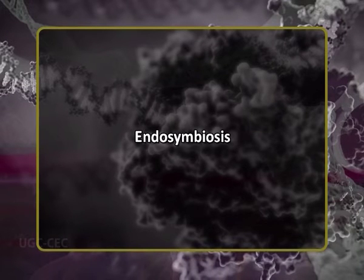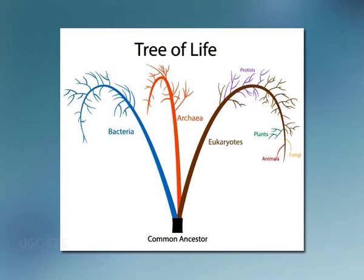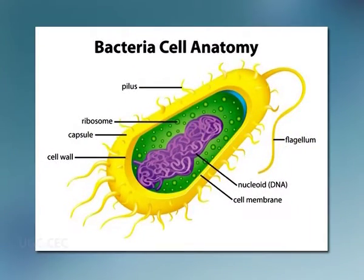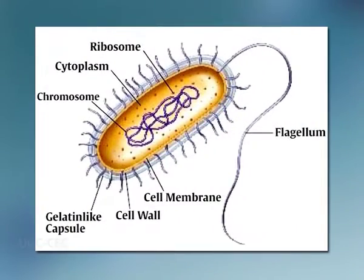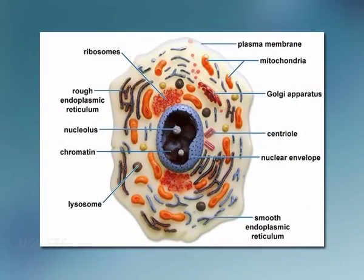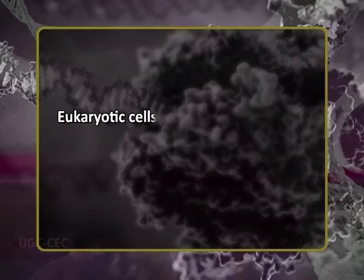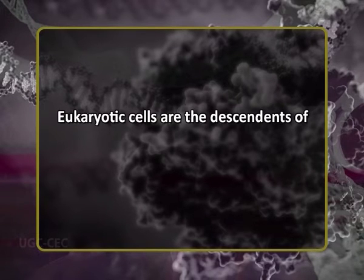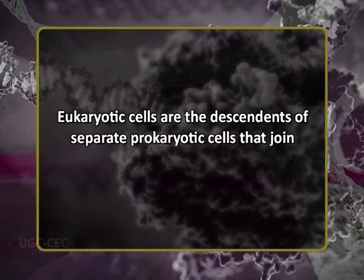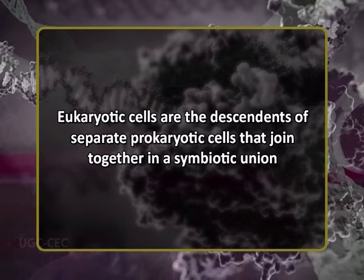Now let us move from prokaryotes to eukaryotes, which is explained by the theory of endosymbiosis. As living things have evolved into three large clusters of closely related organisms called domains — bacteria, archaea, and eukaryotes — a number of evidences supports the idea that eukaryotic cells are actually descendants of separate prokaryotic cells that joined together in a symbiotic union.